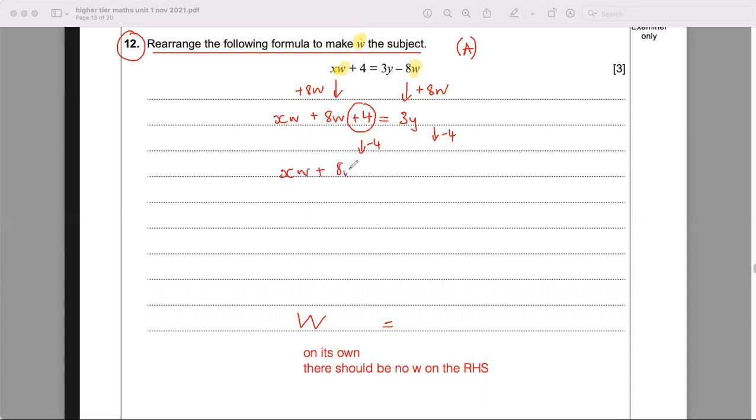Because we just want the w on its own here, but they are together with the x and with the 8, we want to separate that. We're going to factorize, so we put w outside and got x plus 8 left in here, and you got 3y minus 4.